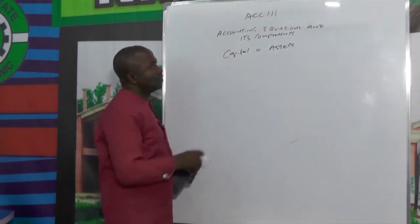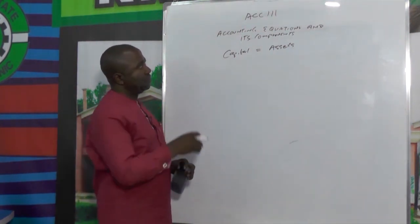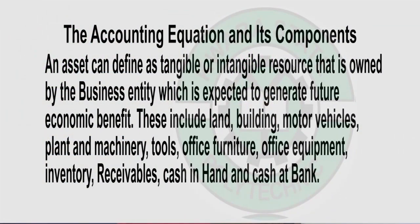That will now take us to know what an asset is, before we go deep into the equations. An asset can be defined as tangible or intangible resources that are owned by a business entity, which are expected to generate future economic benefit. This includes lands, buildings, motor vehicles, plant and machinery, tools, office furniture, office equipment, inventories, receivables, cash in hand, and cash at bank.